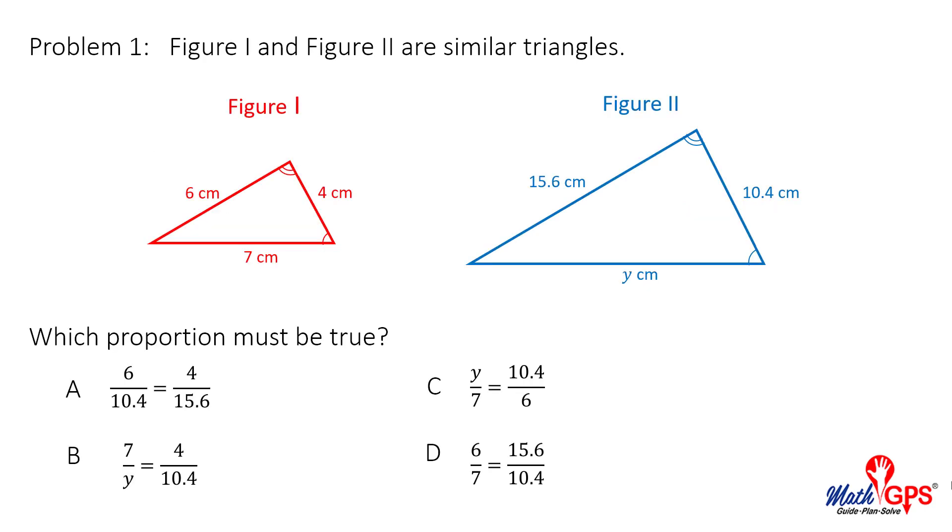Problem 1. Figure 1 and Figure 2 are similar triangles. Which proportion must be true? The correct answer is choice B. The corresponding sides are named in the proportion correctly.